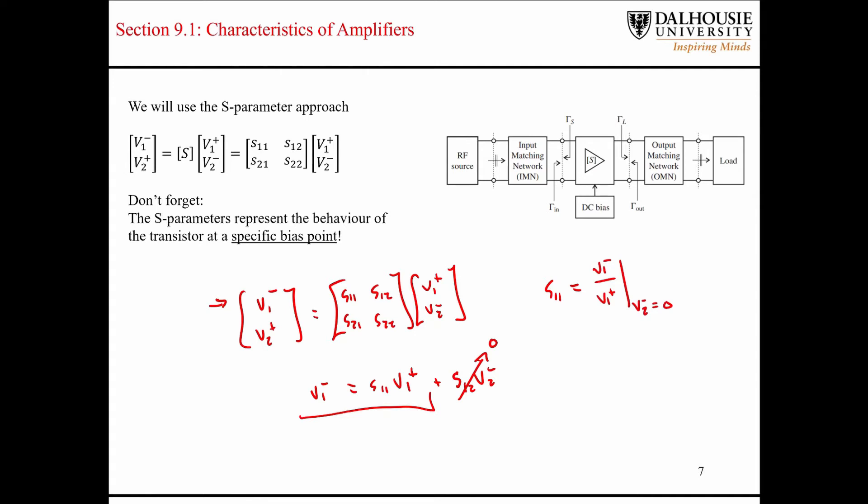So like I said, this term here, the V2 with the little minus sign here, that's going to be the backwards traveling wave here. So if you have a transistor that you have set up to a test fixture, and you want to measure its S-1-1 parameter, how do you ensure that the backwards traveling voltage wave on the output side of the transistor equals 0?